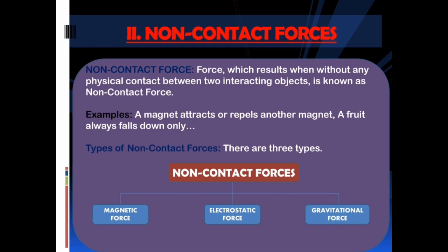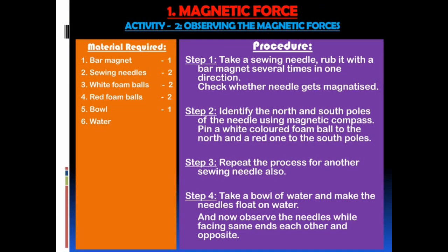Non-contact force is the force which results without any physical contact between two interacting objects. Examples: a magnet attracts or repels another magnet; a fruit always falls down. Types of non-contact forces: there are three types — magnetic force, electrostatic force, and gravitational force.